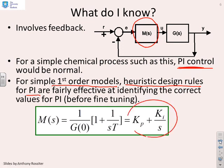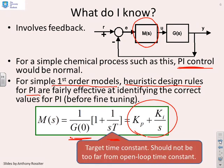Here are the heuristic rules. Basically if we call the PI controller Kp + Ki/s, then we find a Kp of 1/G(0) plus a Ki of 1/(G(0)×sT) is pretty much what you want, and that will give you reasonable performance. There is a bit of a caveat - these rules work well if the target time constant is not too far from the open loop time constant.